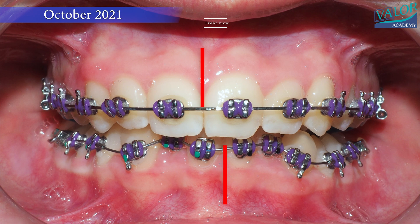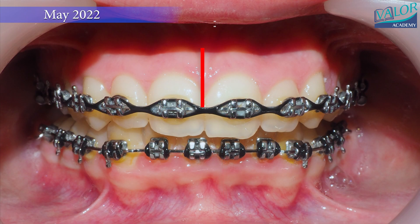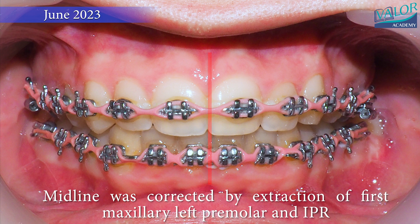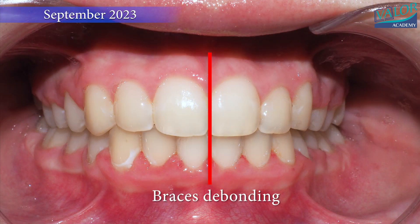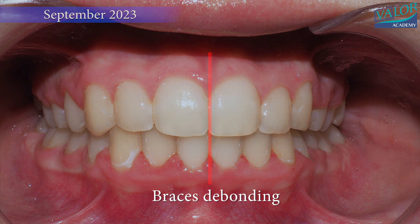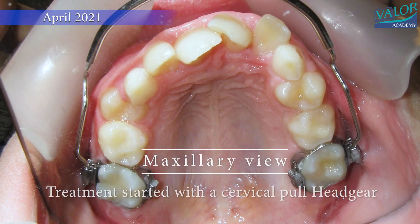One effective approach to correct that is through asymmetric premolar extraction. This method involves the strategic removal of one premolar on one side of the dental arch to create space and allow for the realignment of the remaining teeth.